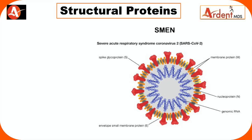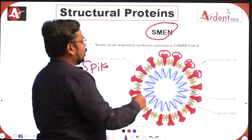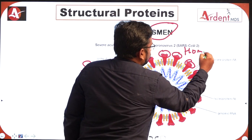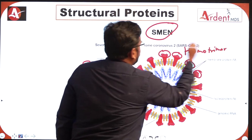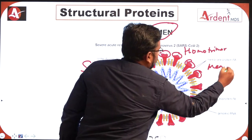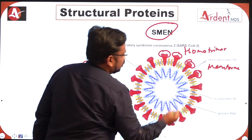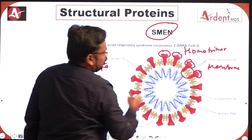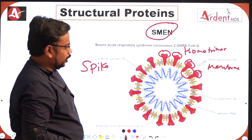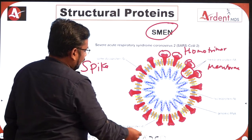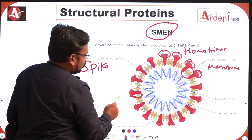Remember the mnemonic SMEN. S is for Spike glycoprotein — this helps for the attachment of the virus to cells and is a homotrimer. M is for Membrane protein — seen as the orange-colored proteins in the diagram.